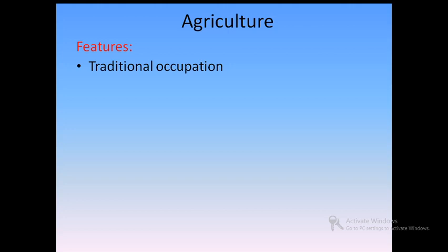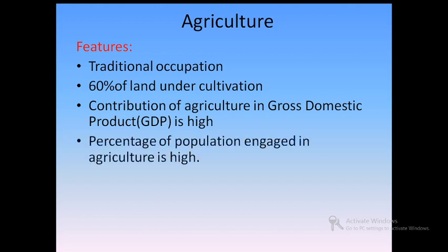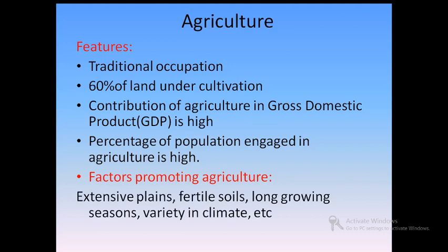Occupations in India: Agriculture is one of the traditional occupations. Nearly 60% of the land of India is under cultivation and most agriculture is of subsistence nature — subsistence means for one's own use. Agriculture contributes highly to the gross domestic product. The factors promoting agriculture are fertile soils, extensive plains, long growing seasons, and variety in climate.